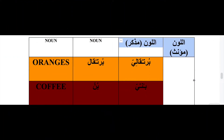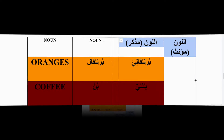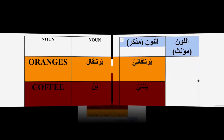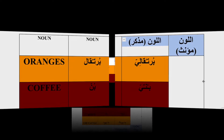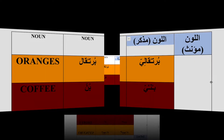Arabic has two sets of colors. One set is made with the pattern in the masculine and feminine, and another set of colors that is taken from things in nature — and that's the set we're talking about today.